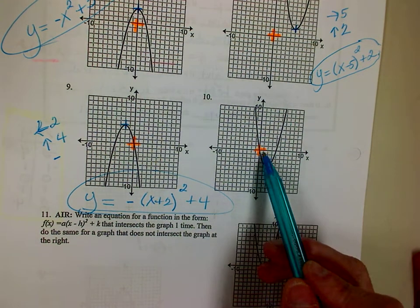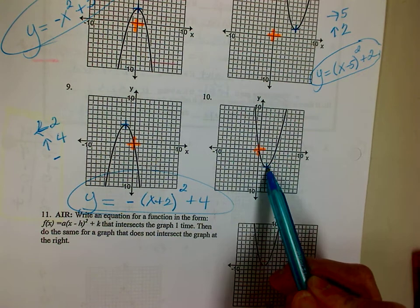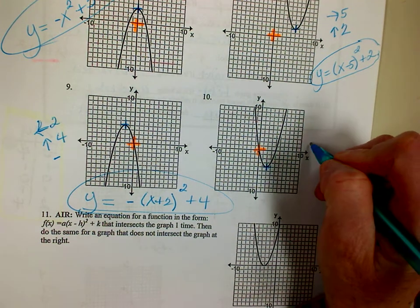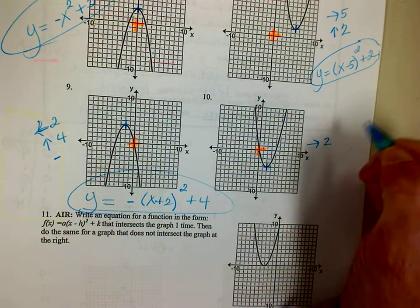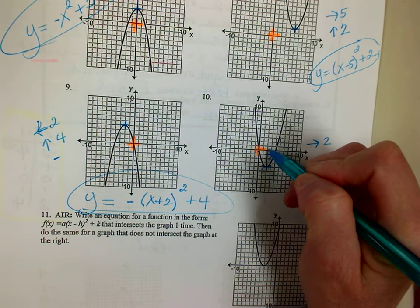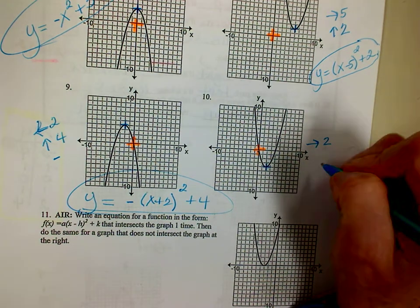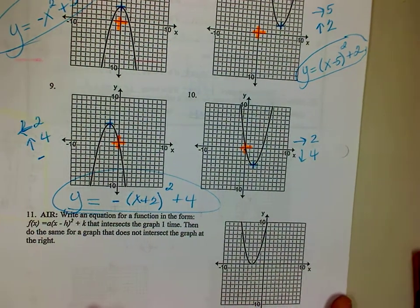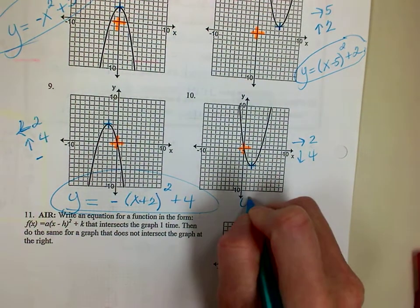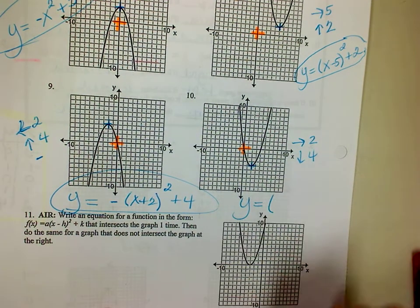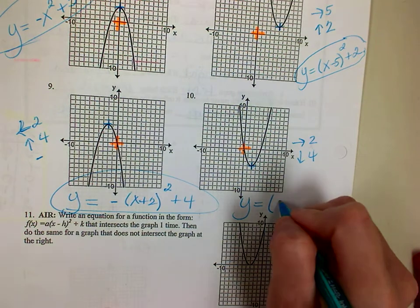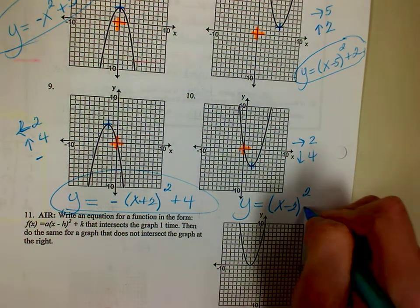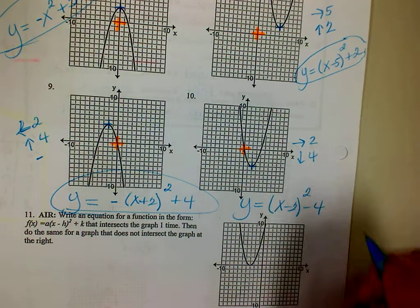Number 10. I went from here to here — to the right 2, down 4. It is not upside down, so I don't have to worry about any negatives. So y equals, since I went to the right it's going to be x minus 2, squared for a parabola, and then minus 4.